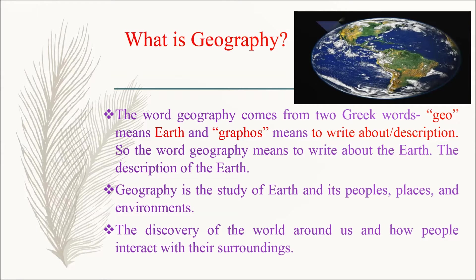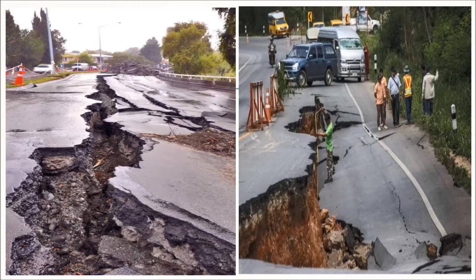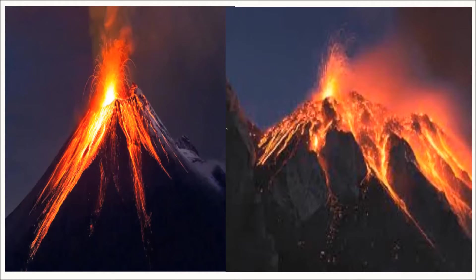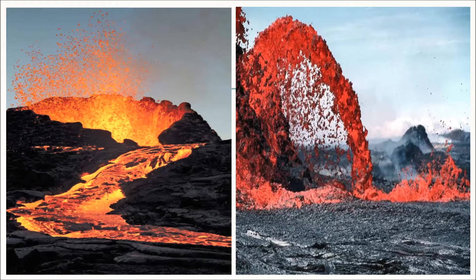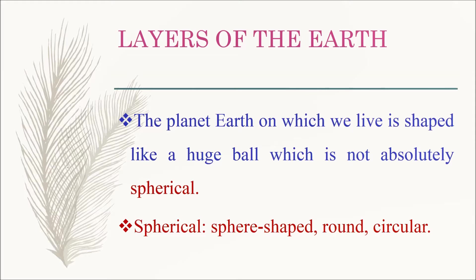It covers the discovery of the world around us and how people interact with their surroundings. Students, did you ever break or open your toy as a child to see what makes it work? It is a natural human tendency to be curious about how things work. We see and hear of earthquakes, lava etc. But where does it come from? In this chapter we shall see what is inside the earth and how it keeps changing form.